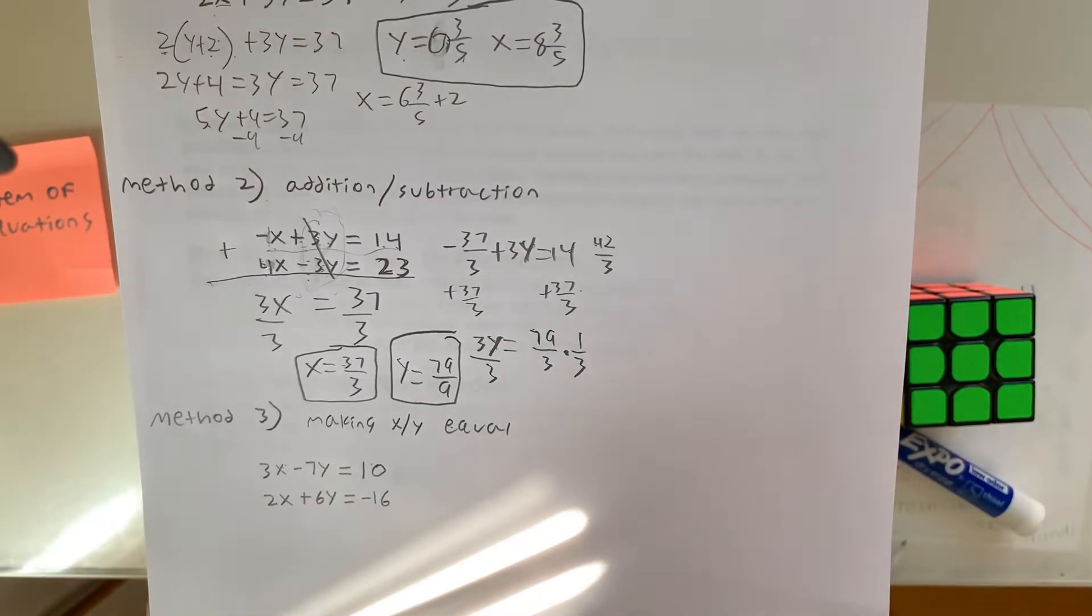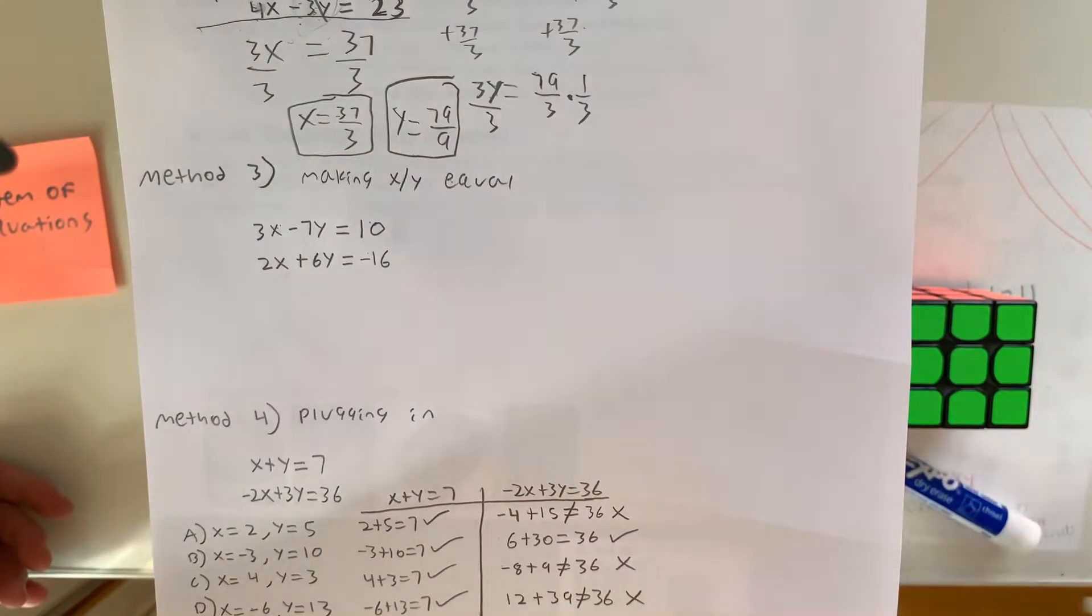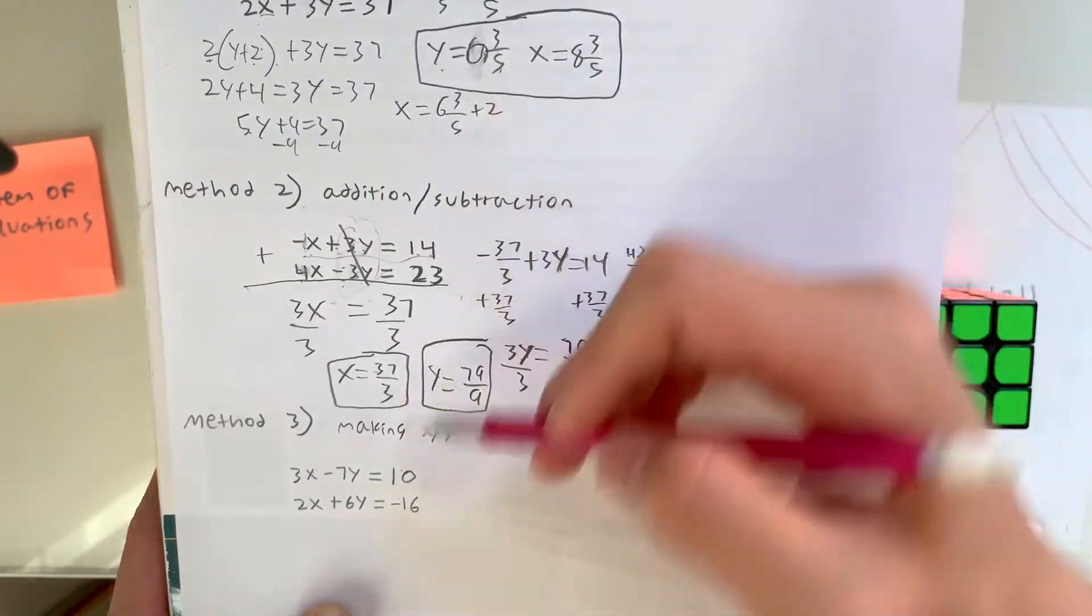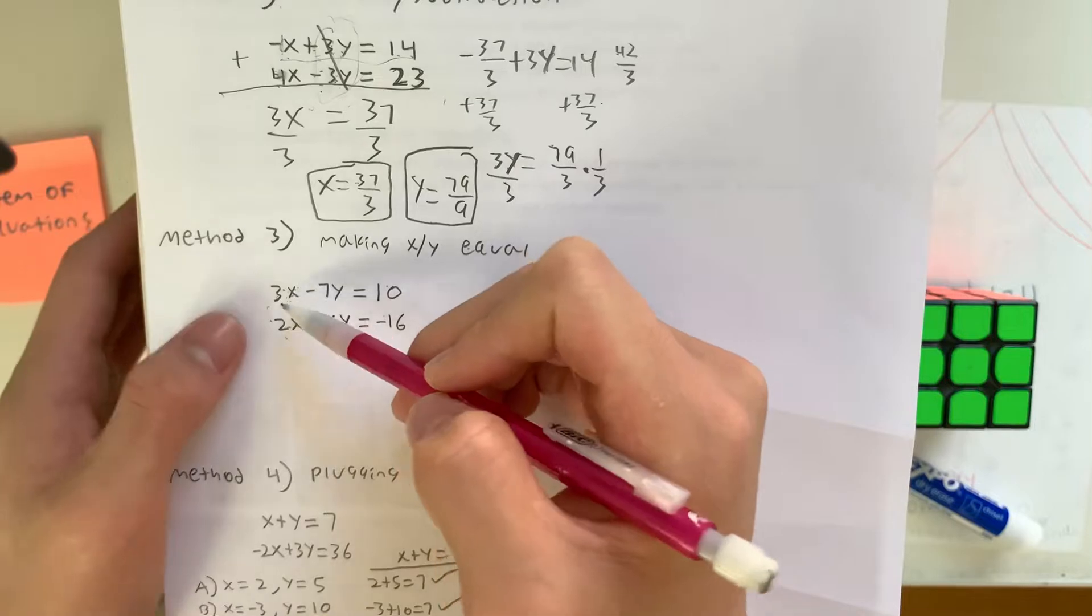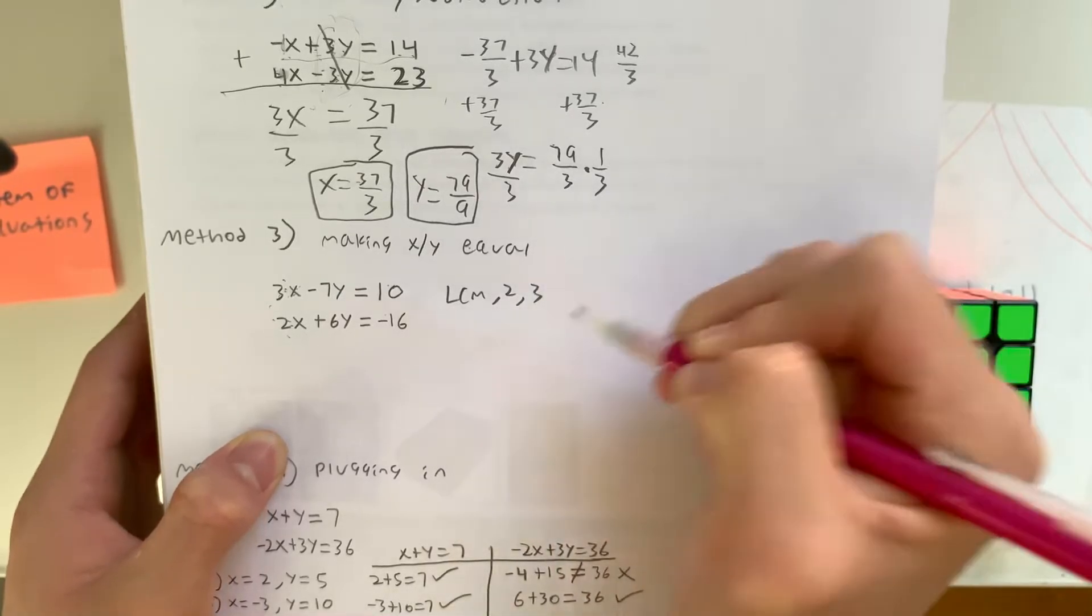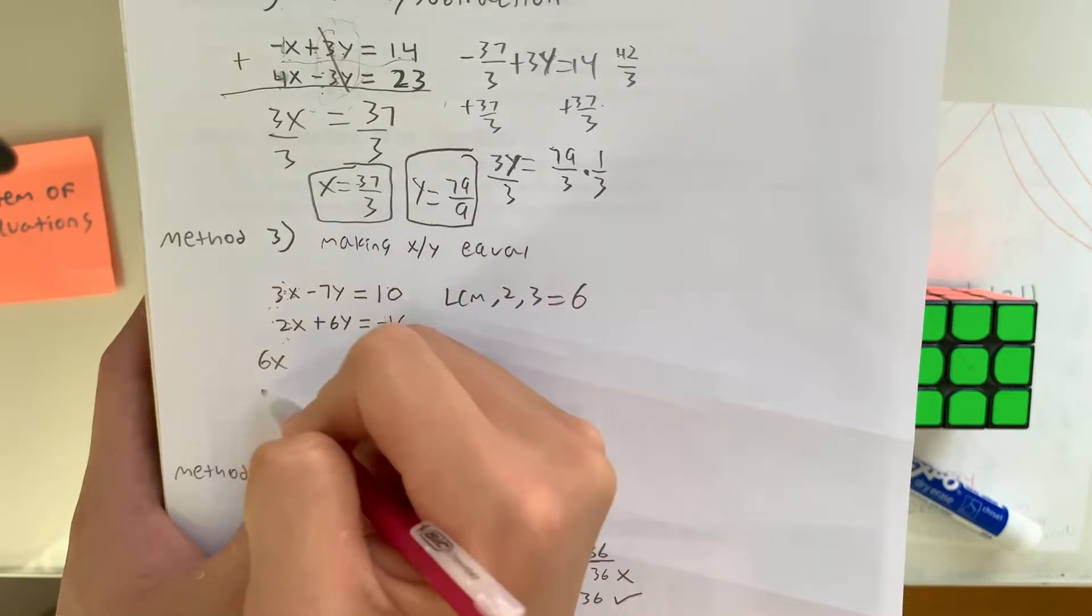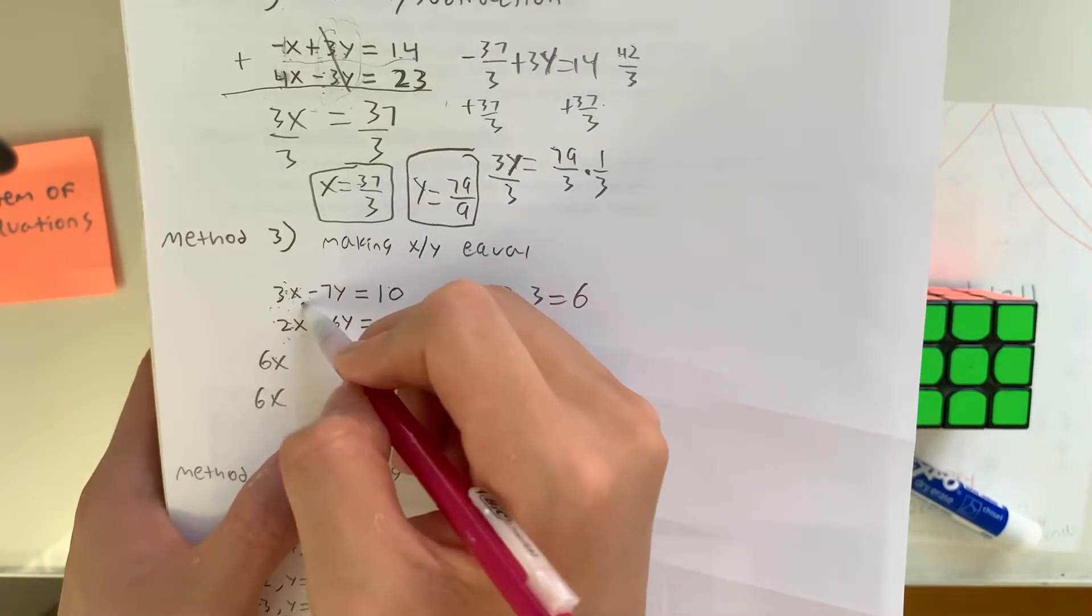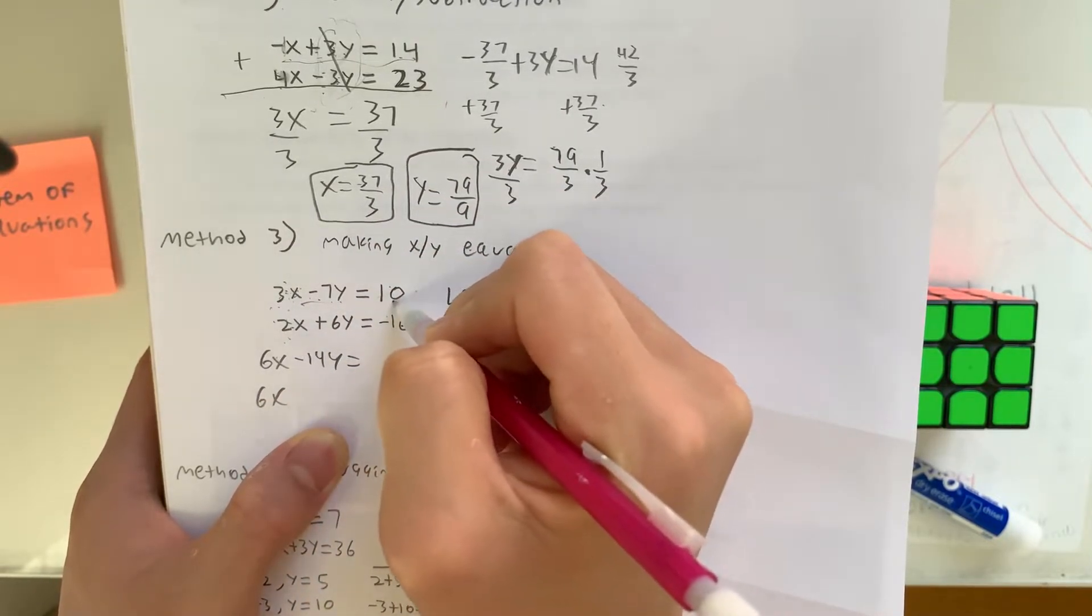And the next method we have is making xy equal. So what does this mean? Basically, because you can't do any of the previous methods on this question, you're going to have to make both of the variables equal. So what's the least common multiple, the LCM of 2 and 3? It's going to be 6. So you're going to make these 6x. So how did you get 6x from 3x? You multiplied both sides by 2, so you have to multiply the rest by 2. What's negative 7y times 2? That's negative 14y. And 10 times 2? That's 20.